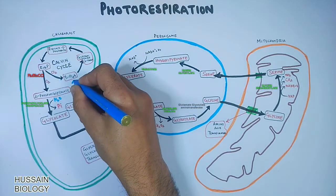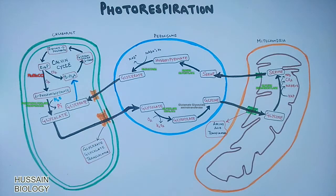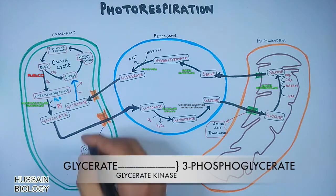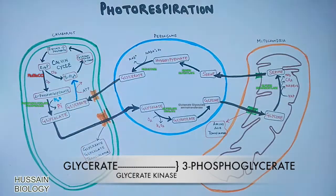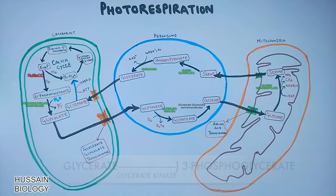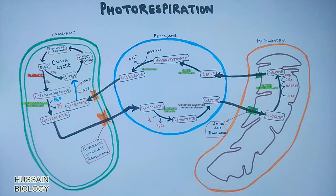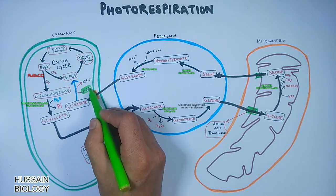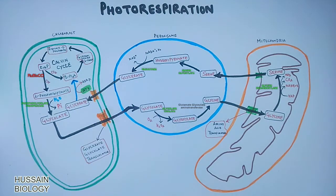Hydroxypyruvate is then converted into glycerate by the enzyme hydroxypyruvate reductase, oxidizing NADH to NAD+. Finally, glycerate is translocated back to the chloroplast, where glycerate kinase converts it into 3-phosphoglycerate — consuming an ATP molecule — making it available for the Calvin cycle. This completes the photorespiration reactions across the three cellular organelles.